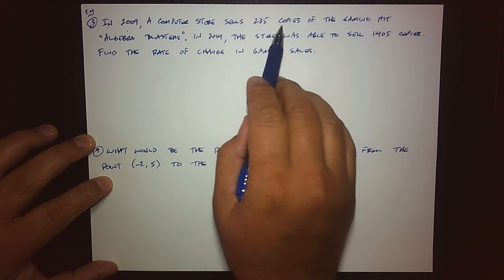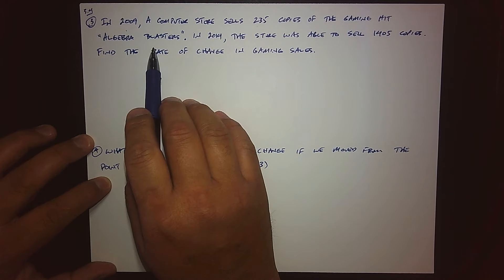So the first problem says that in 2009, a computer store sells 235 copies of the gaming hit Algebra Blasters. And I know you guys probably had that in your little PlayStation queue, right? Just joking. In 2014, the store was able to sell 1,405 copies. It was really a hot item.